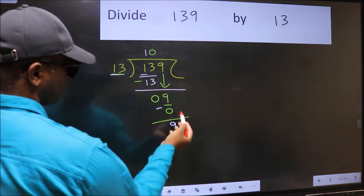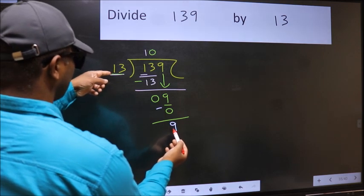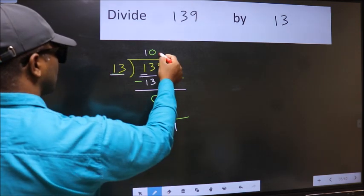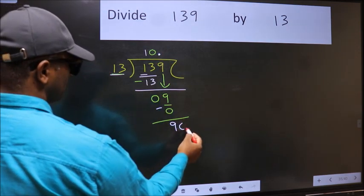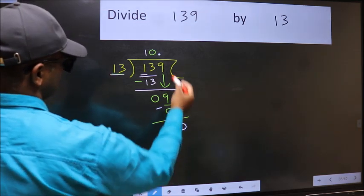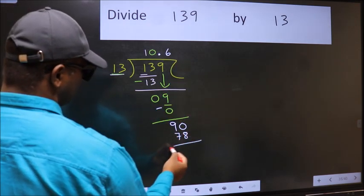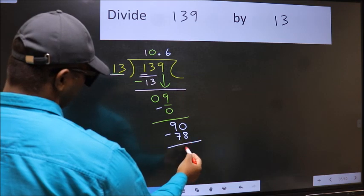So now we can put dot and take 0, so 90. A number close to 90 in the 13 table is 13 times 6, which is 78. Now we should subtract, and we get 12.